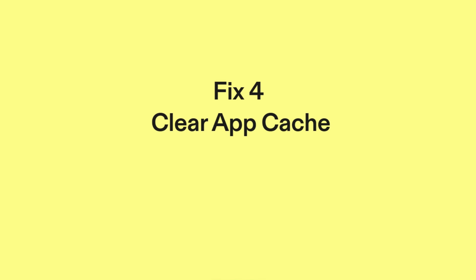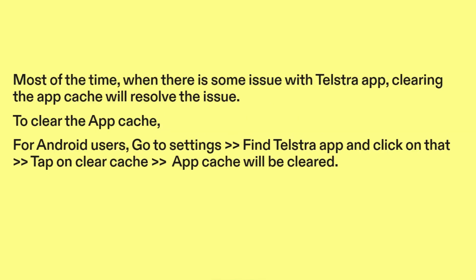Fix 4: Clear app cache. Most of the time, when there is some issue with the Telstra app, clearing the app cache will resolve the issue. For Android users, go to Settings, find the Telstra app and click on it, then tap on Clear Cache and the app cache will be cleared.